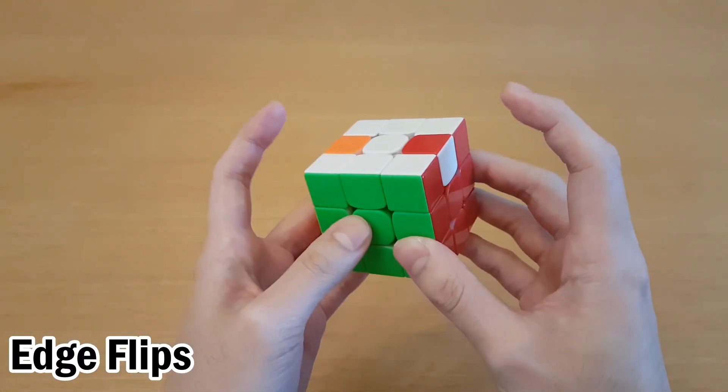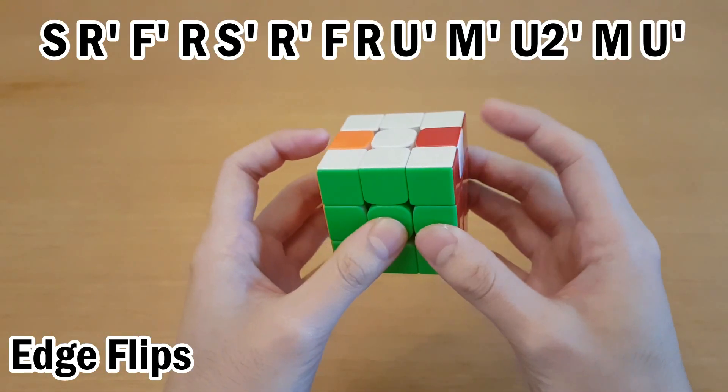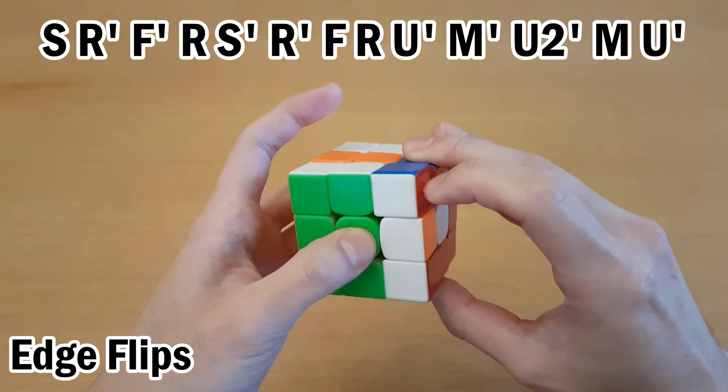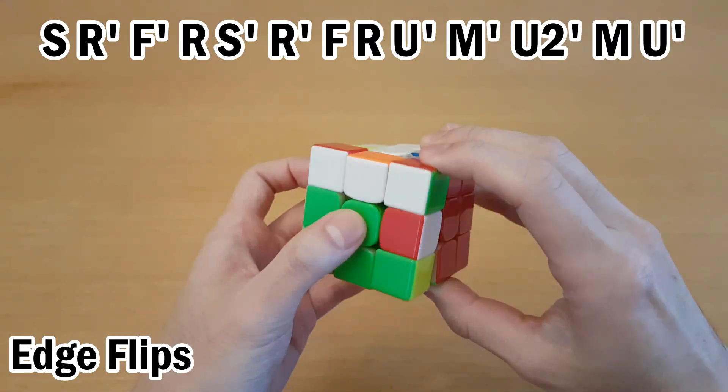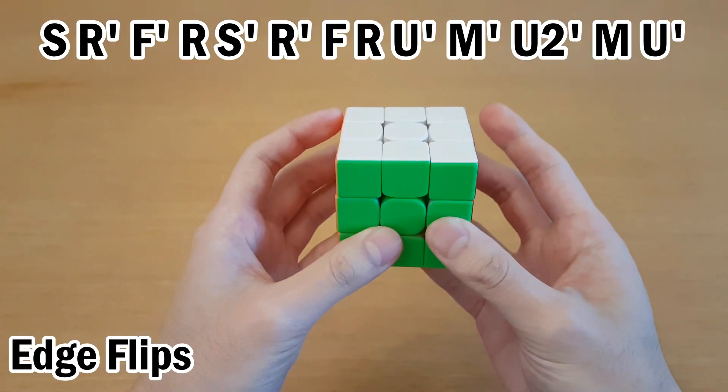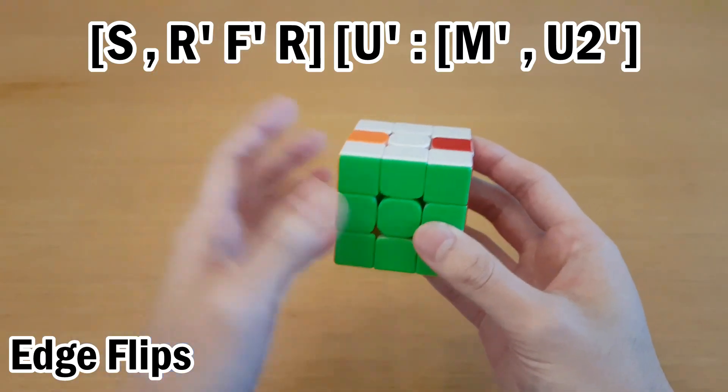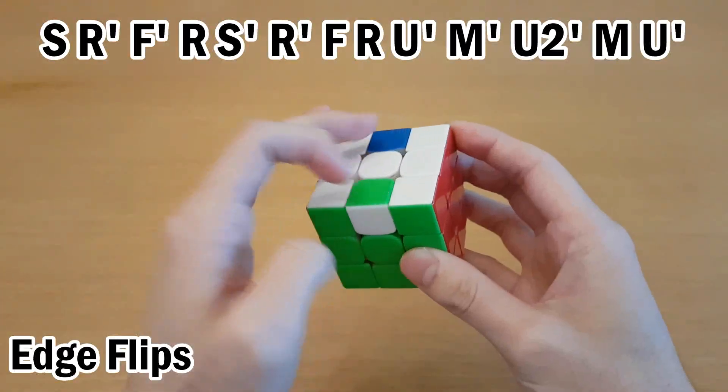For the rest of the flips, you have to know how to solve this one, and we'll use variants of this to solve any other flip. So the algorithm goes like this. So that's just two commutators, but they don't use UF as the buffer, so you may be unfamiliar with them.